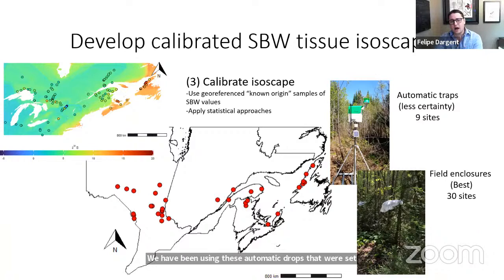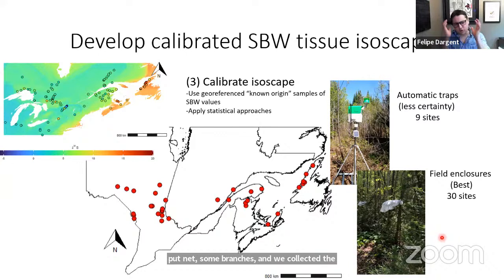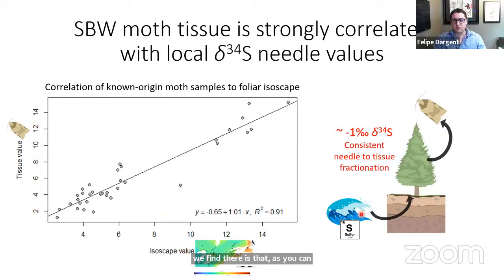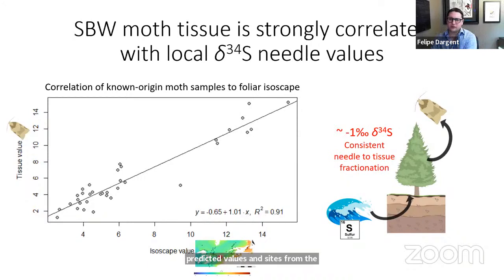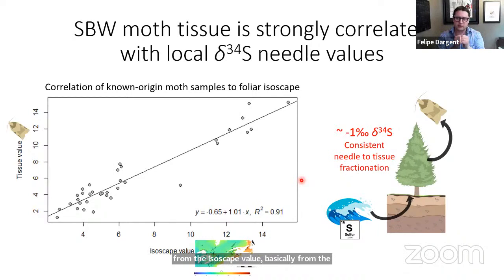We also set several field enclosures where we put nets on branches and collected the pupae or adults afterward, so we know for certain those moths grew their tissues in that specific area. What we find is that moth tissue δ34S — on the y-axis — has a very strong correlation with the predicted values from the isoscape. There is also more or less a one per mil fractionation from the foliar isoscape to the moth.